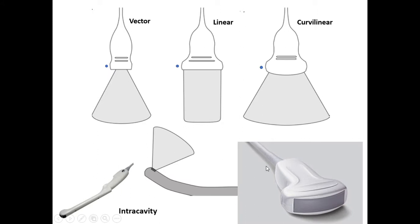Each probe has three parts: tip, body or handle, and tail. At the tip of the probe there is a surface we call the footprint — that is where the sound comes out — and it has two axes: long axis and short axis. Generally, we have two types of ultrasound probe or transducer: intracavity and extracavity probes. Intracavity probes are almost the same as extracavity probes but have a longer handle and smaller footprint.